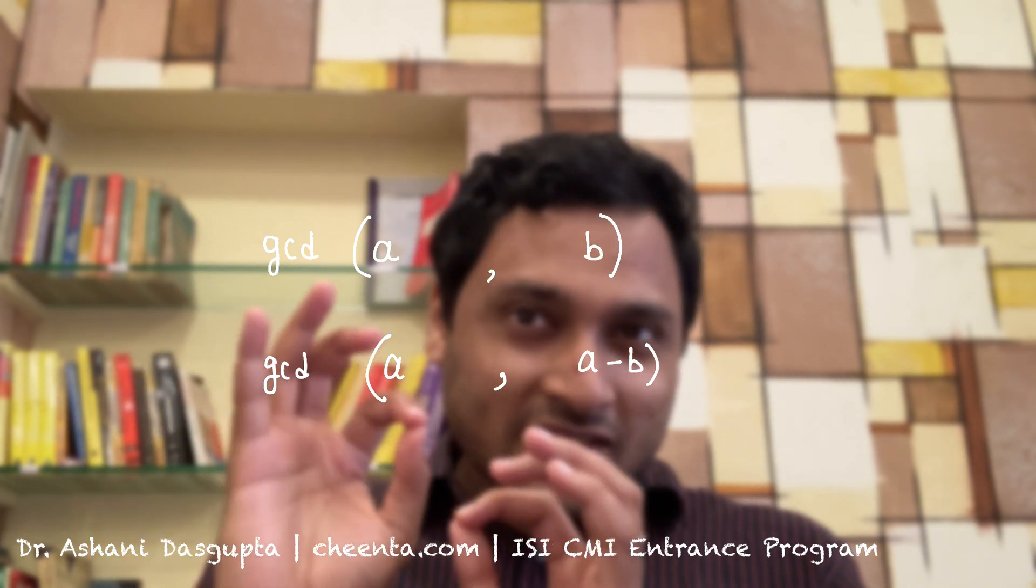What just happened is you did a subtraction, and if you keep on doing this, the numbers would get smaller and eventually the GCD would be really easy to compute, even if you started with very large numbers.